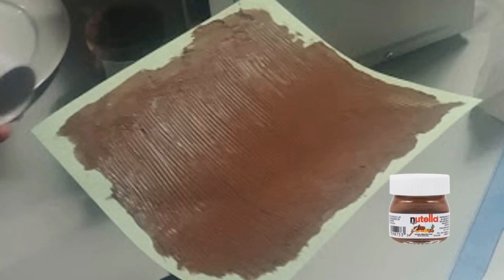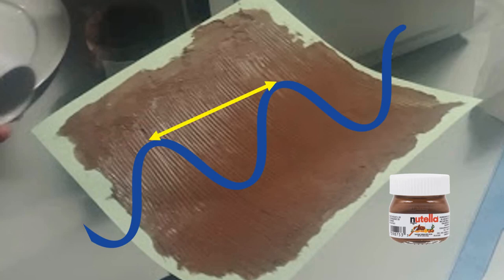The microwave oven produces the microwaves and the microwaves run across the food, they reflect and interfere with each other and produce a pattern of hot spots and cold spots. You can use the distance between two hot spots or two cold spots to work out what half the wavelength of the wave is. And if you multiply that distance by two, you get the wavelength.